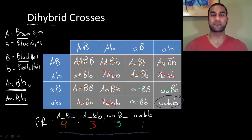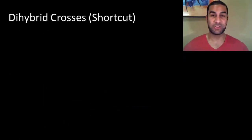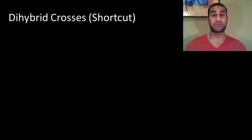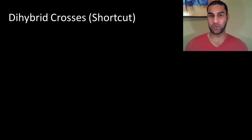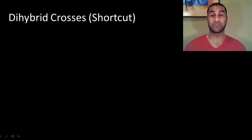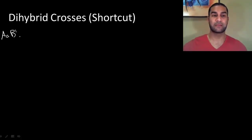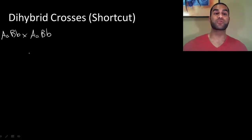Make sure you remember the 9:3:3:1 ratio and can work through the gamete process to identify all possible offspring. There is a shortcut to this process — you still need to know how to identify all possible gametes for an individual parent, because that could be a question on its own. However, I find this a much easier way to come up with the phenotypic ratio of any dihybrid cross. Let's say we're doing the same cross: two parents heterozygous for both traits — two dihybrids.